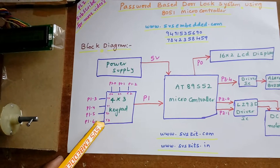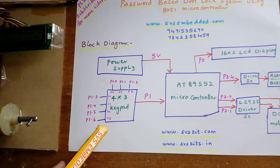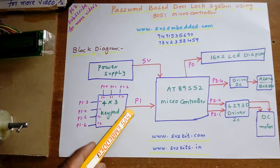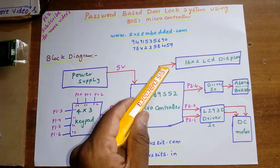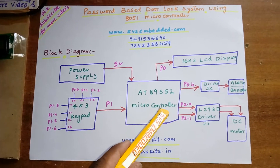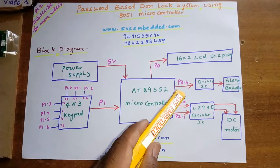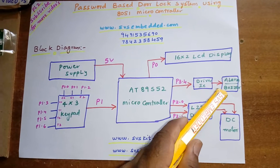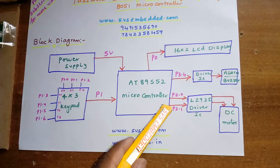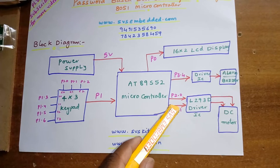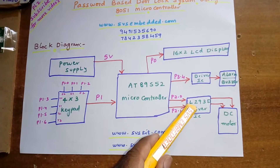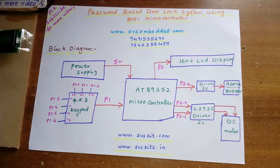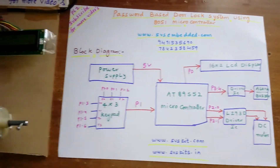I am using one 4x3 keypad, called a telephone keypad, connected to P1. The LCD is connected to P0. I am using one electric buzzer on P3.4, and P2.0 and P2.1. I am also using one L293D driver IC and one DC motor.